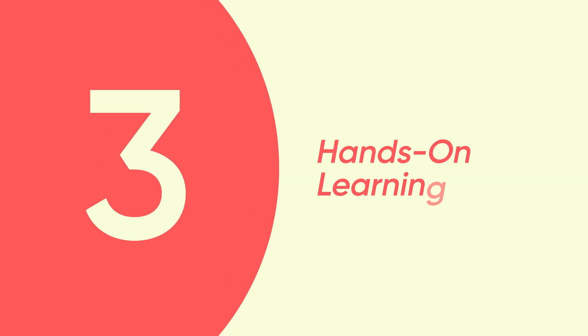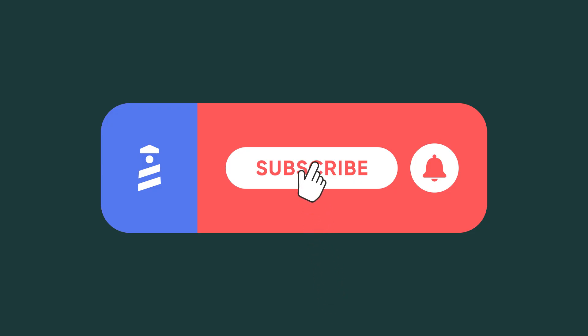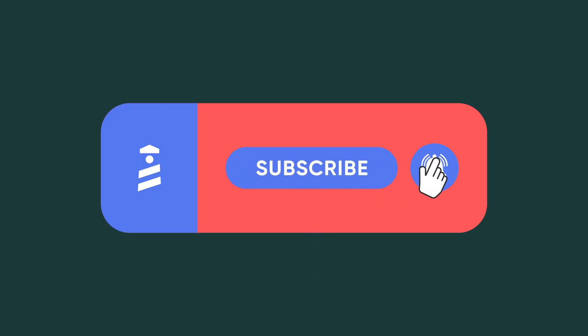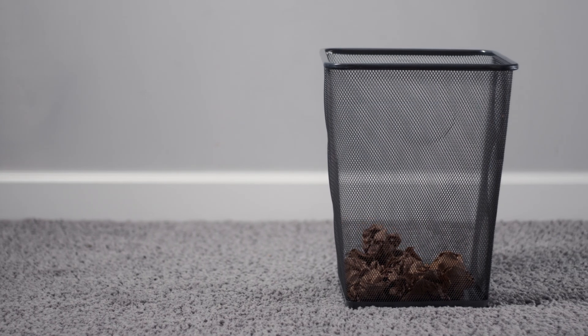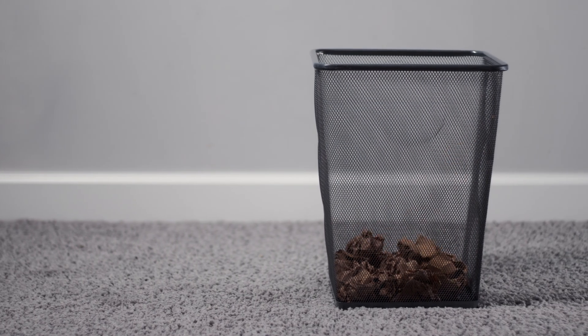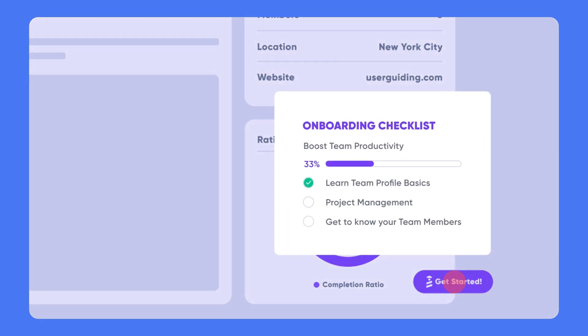Three: hands-on learning. Traditional onboarding is like being lectured at sometimes, but what users really need is to dive in and learn by doing. Ditch the long feature list and instead show users the real value of what your app can do. Spice it up with interactive walkthroughs, maybe add a checklist or two — gamification is your friend here.